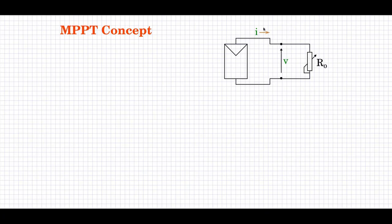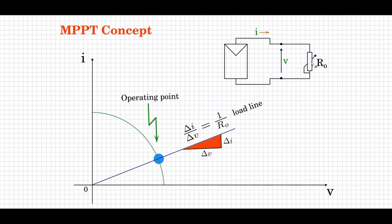Consider this simple circuit. We have the photovoltaic module connected to a simple load R0, a simple resistive load R0. R0 is a variable resistance. What happens when we sweep R0 from a short circuit (0) to open circuit? We can see that in the IV characteristic of the PV panel — we measure V and I, then plot V on the X axis and I on the Y axis. This is approximately the IV curve of the PV panel. We see this line here — that is called the load line.